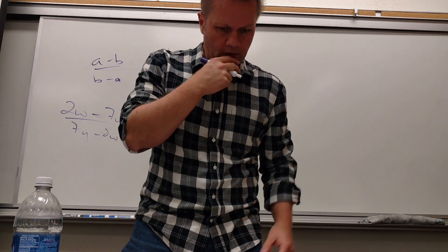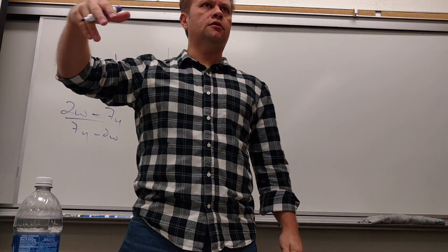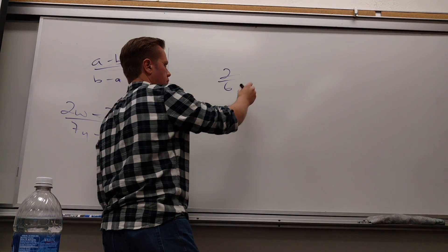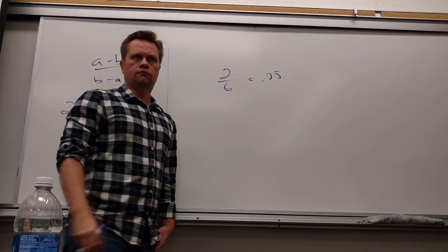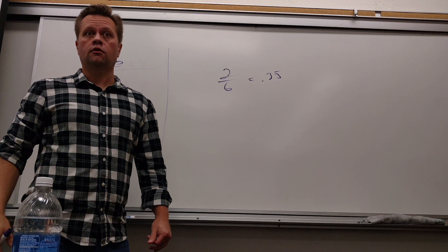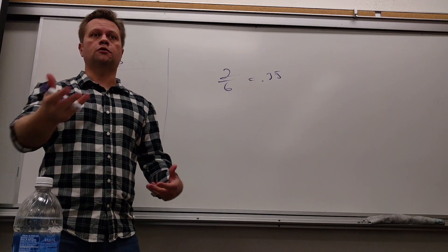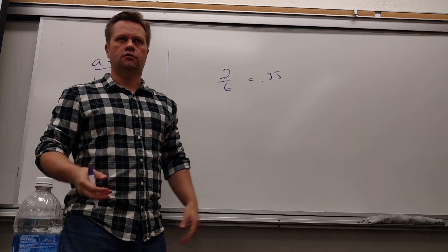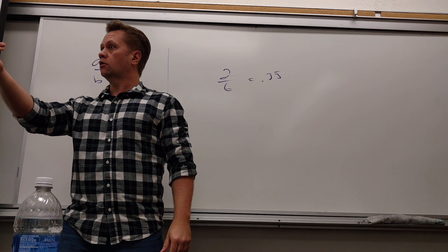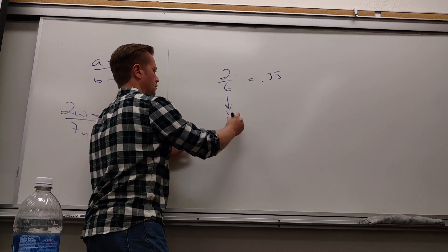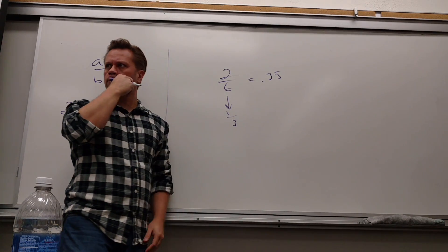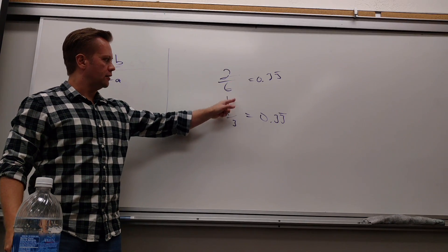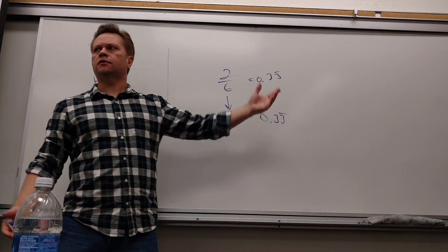2 out of 6 reduces to 1 out of 3. So you can reduce fractions — ratios. If you did 2 divided by 6 in your calculator it would be .333 repeating. If you have a 2 out of 10 chance, that's a 20% chance — that's a 1 out of 5 chance, which is still 20%. So when I reduce a fraction, I don't change the number, I just change the way it looks. This is reducing, and this is converting from fraction to decimal. But either way, both of these are .33 repeating — they're both the same number.